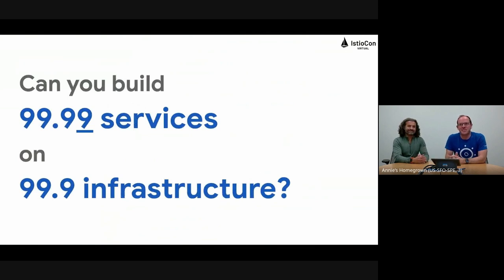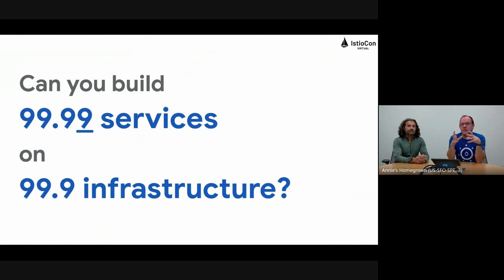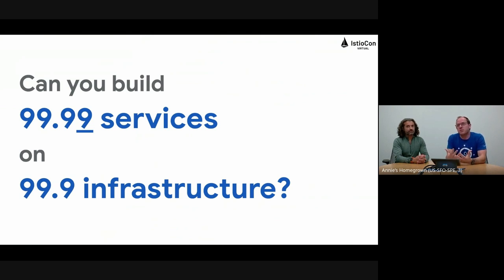So let's start off with a question — try to answer this in your head. Is it possible to build four-nine services — that is, something with 99.99% availability — on top of three-nines infrastructure? Can you build something more reliable on top of things that are less reliable? I'll put it out there that whenever I ask it, the room is split in half — yeses and nos. So it's not a straightforward question. The answer actually is yes, and I hope by the end of this talk you'll agree with me.